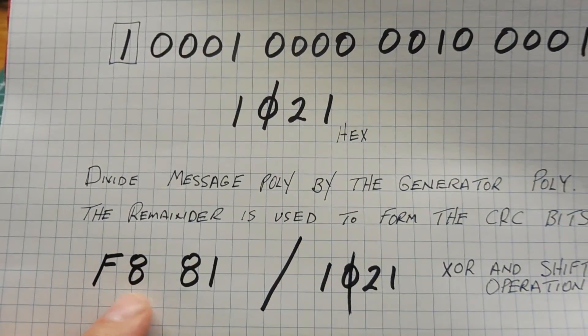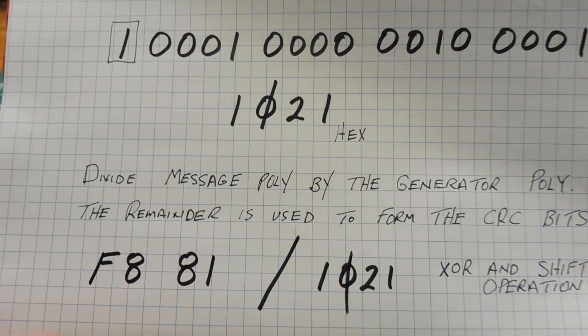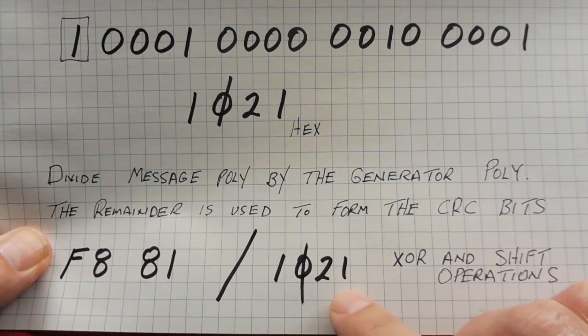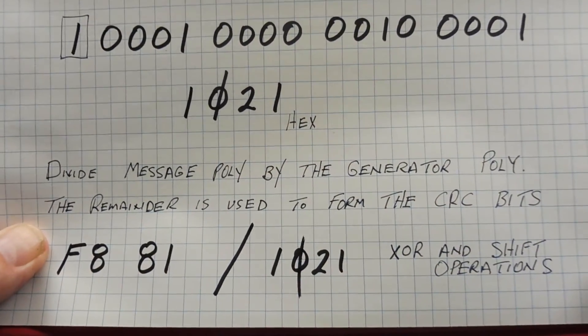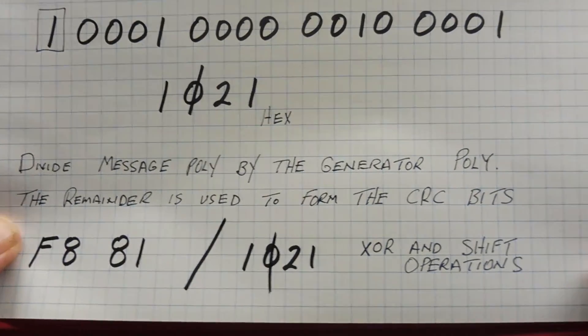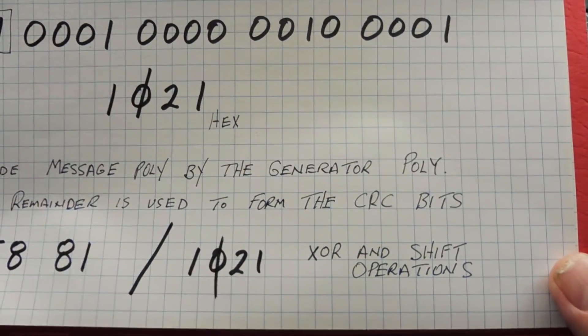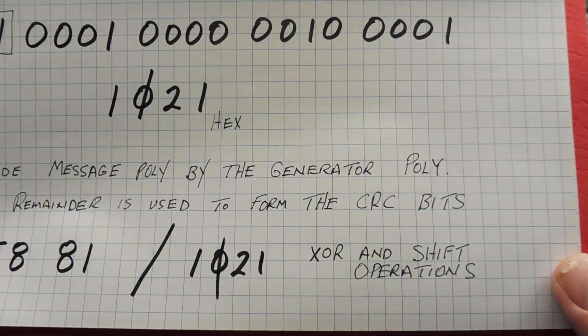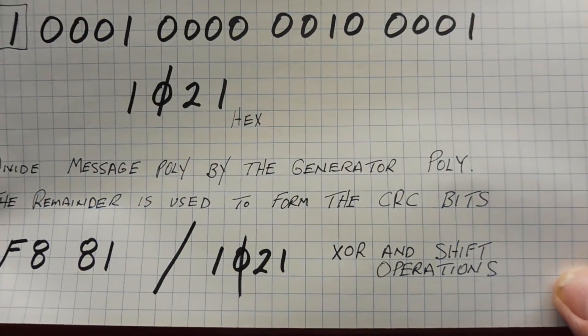So here's our data, F881, that's our message, and we divide it by the 1021 hex, that's our generator. And to do that in a microcontroller, we use XOR, exclusive OR, and shift operations. So next we'll have a look to see how we can do that.